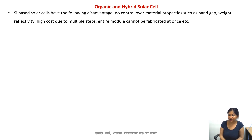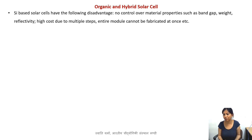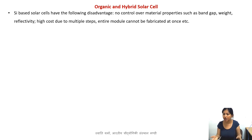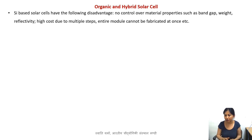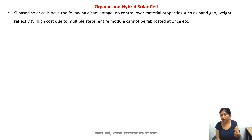One major disadvantage of this technology is that we have no control over the properties of silicon. Silicon has its natural properties — the band gap is what it is, the reflectivity is what it is, the weight and fragility of silicon. Whatever silicon's natural properties are, we have to work with them. We can cover it with an anti-reflective coating, which is done most of the time, but we cannot really tune the properties of the material itself.